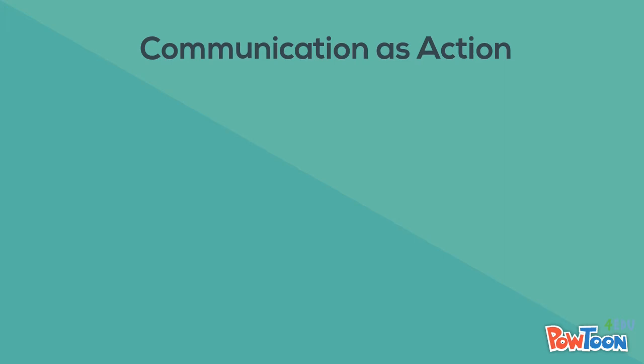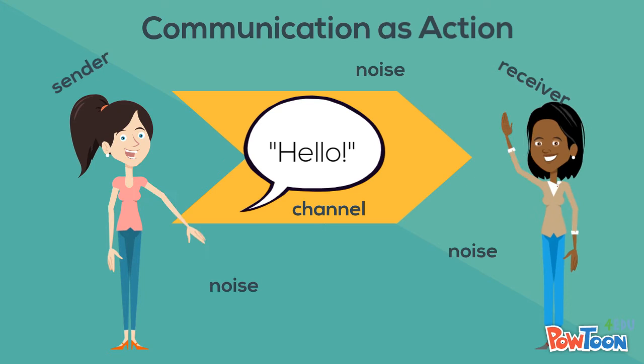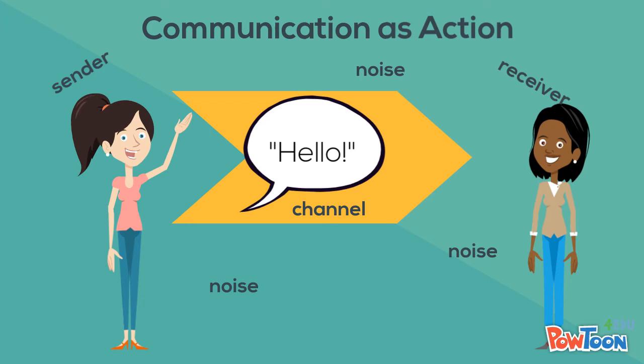The first communication model is communication as action. This is linear or one-way communication, also seen as message transfer. The sender sends a message to the receiver via a channel, and there may be noise, but the communication stops there. This is like sending an email but never getting a response.